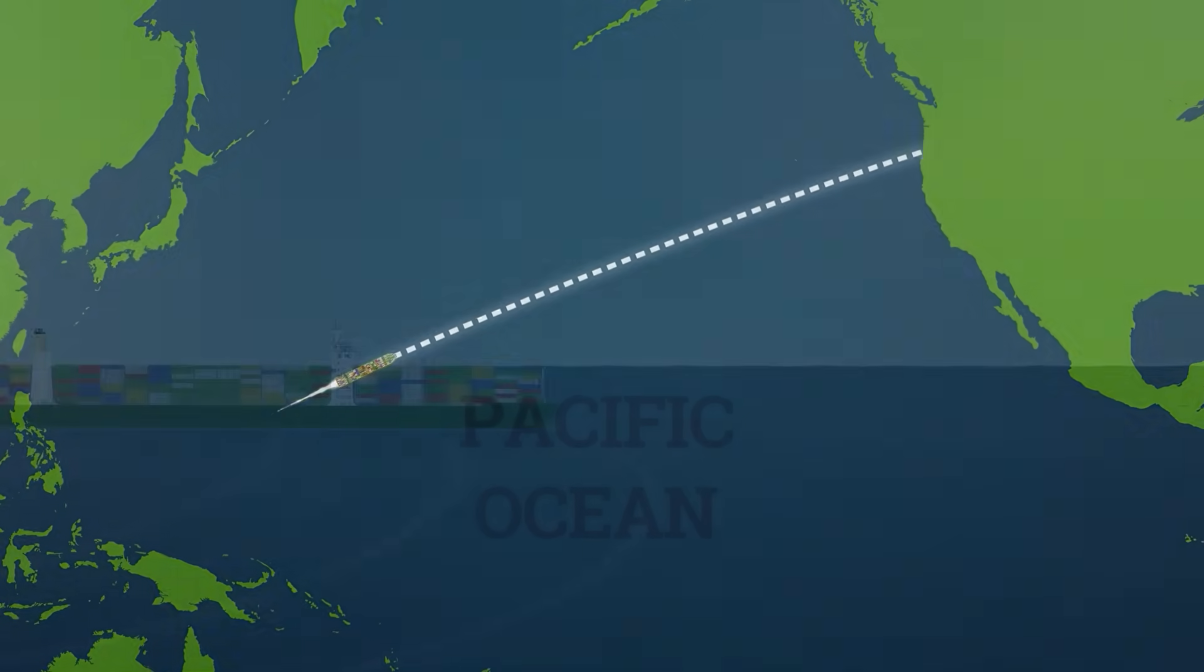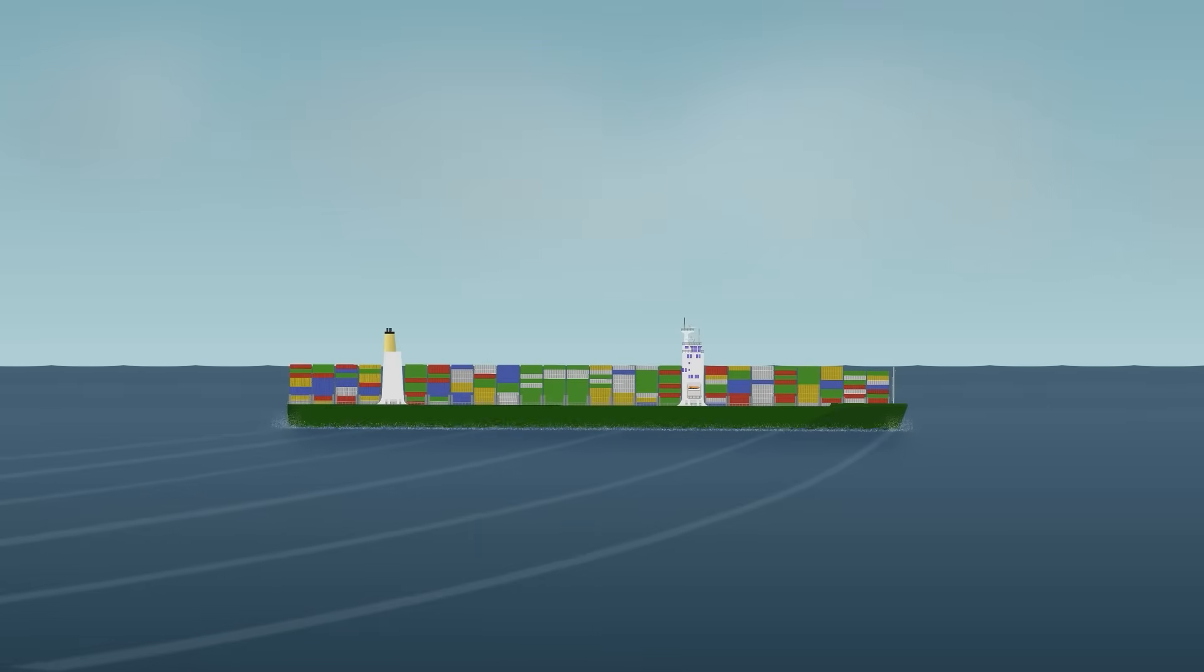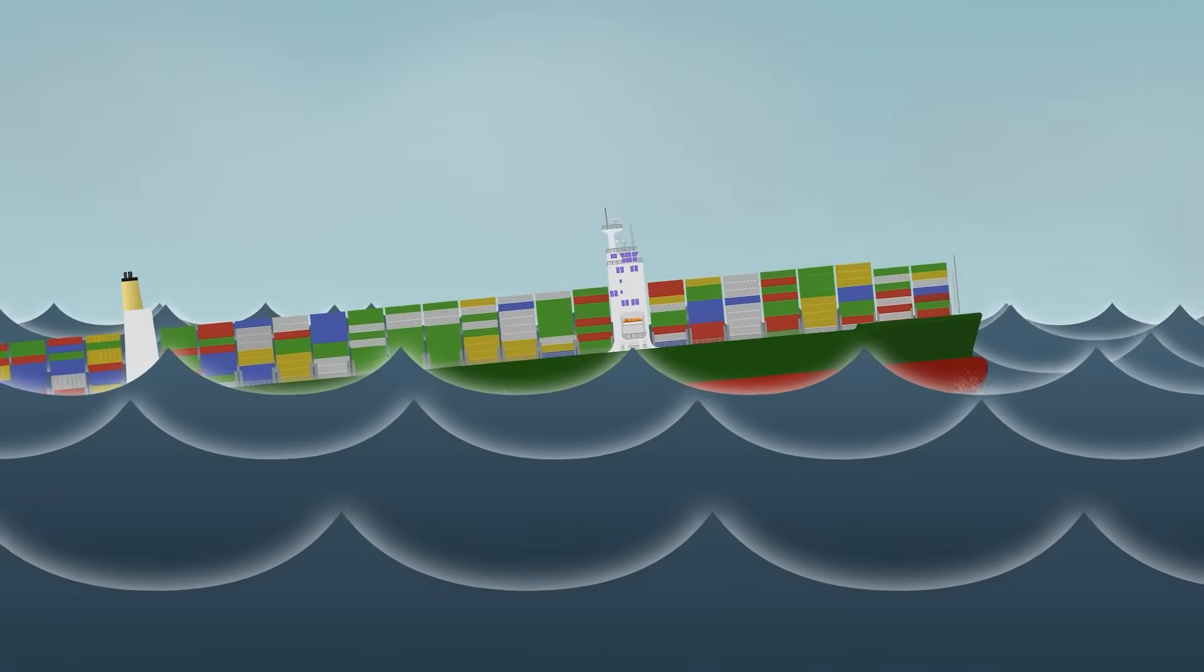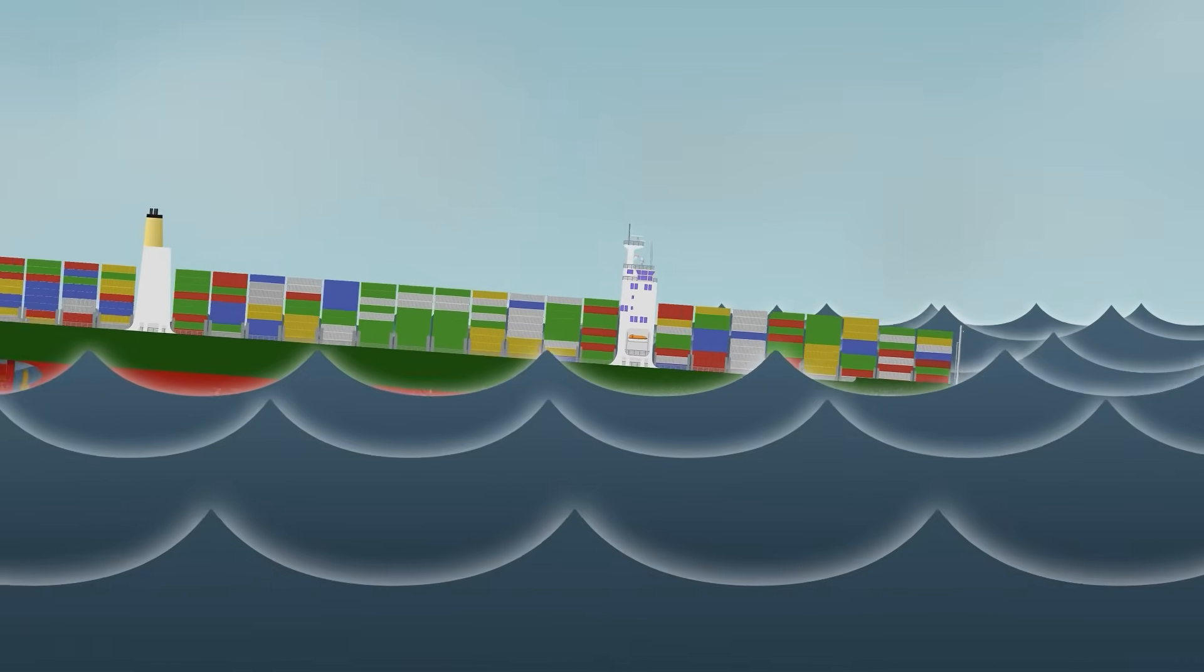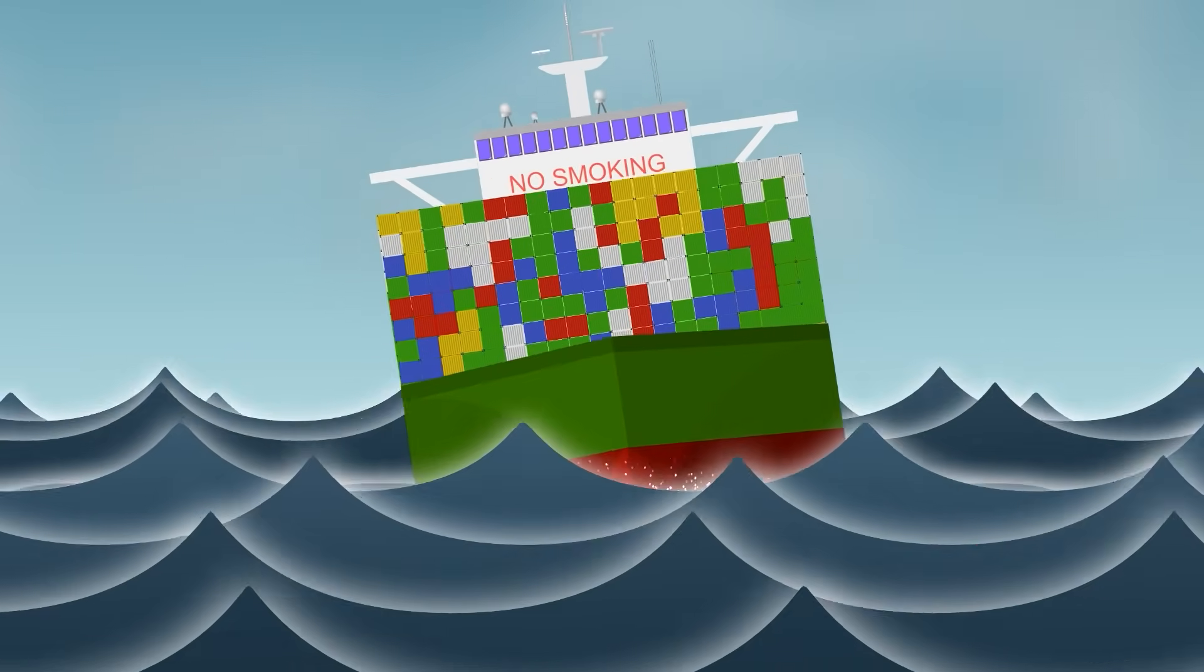A container ship crosses the Pacific. The weather forecast looked manageable. Then the waves hit at a particular angle, at a particular frequency. The ship begins to roll, side to side.